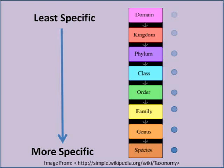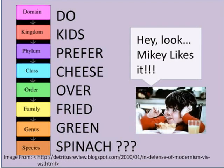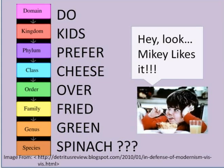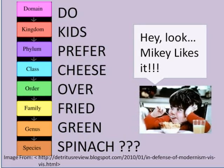The eight taxonomic ranks are as follows: domain, being the least specific; kingdom; phylum; class; order; family; genus; and species, being the most specific. These taxonomic ranks can be remembered by the acronym: 'Do Kids Prefer Cheese Over Fried Green Spinach?'